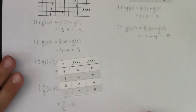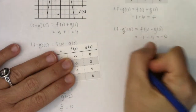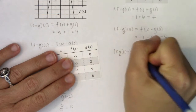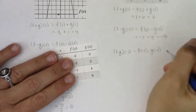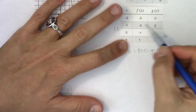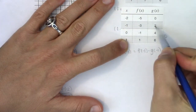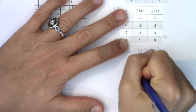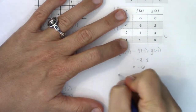The next quantity is f times g evaluated at negative one, which is f of negative one times g of negative one. When x is negative one, f of x is negative three and g of x is two. So this is negative three times two, which is negative six.